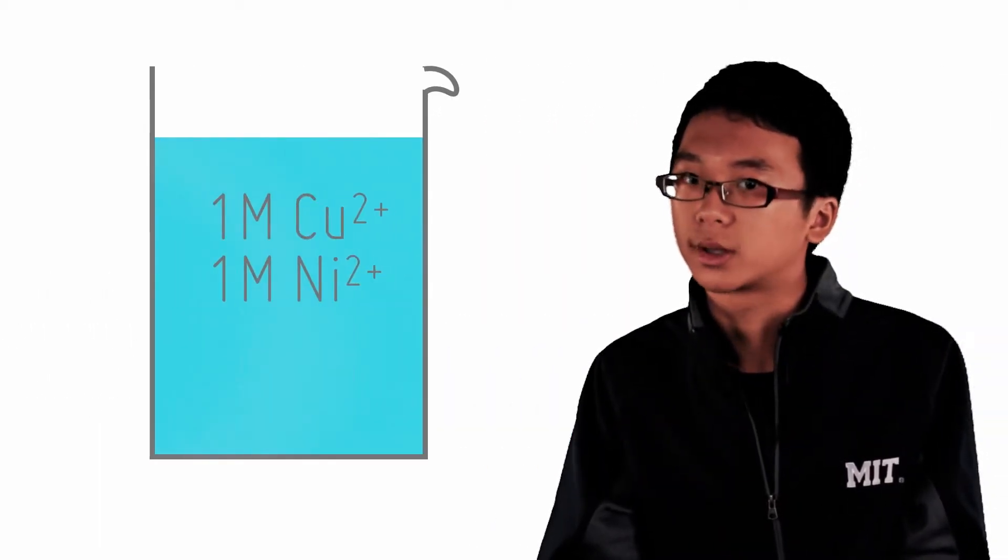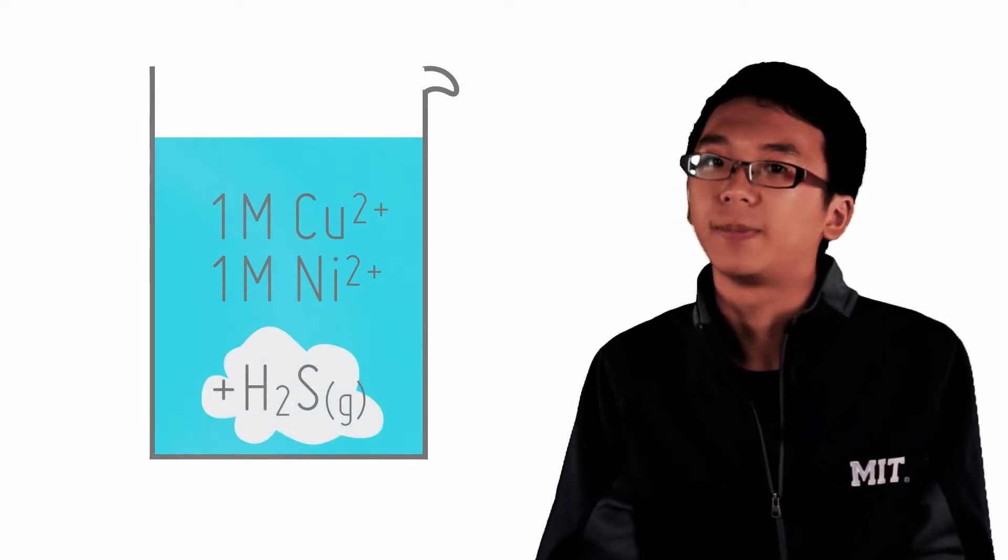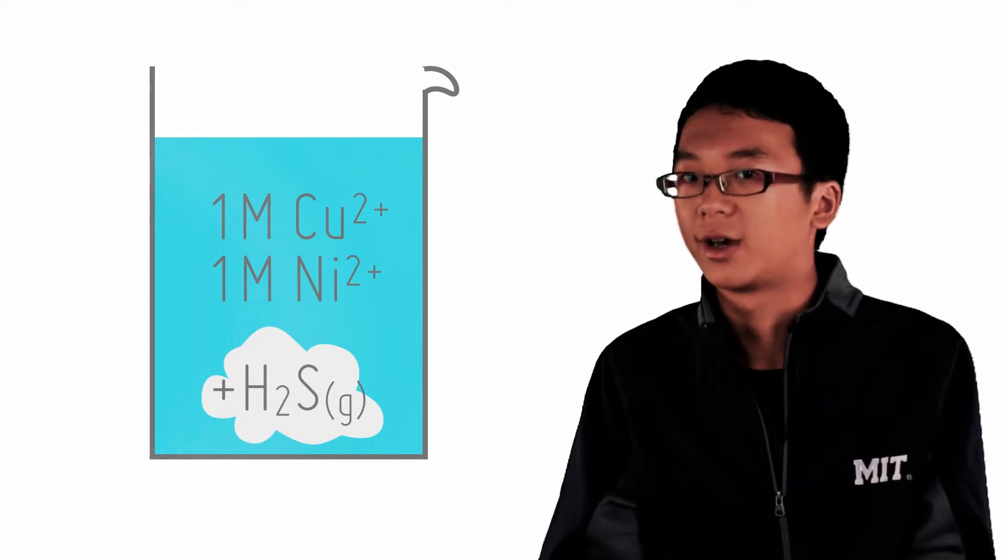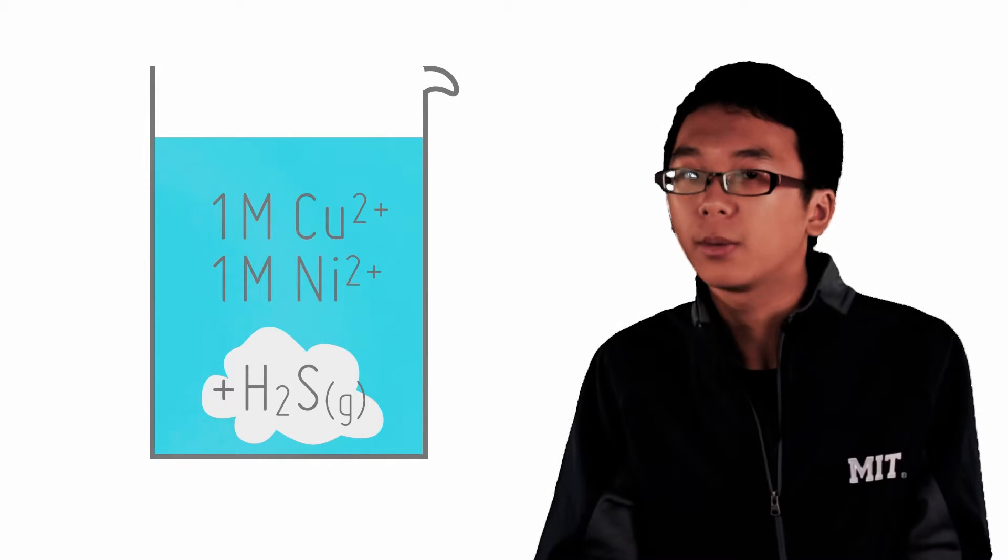H2S will react with water to produce hydronium and S2- ions. This tells you that if you want more S2- ions, you should shift the equilibrium right by putting a base inside.